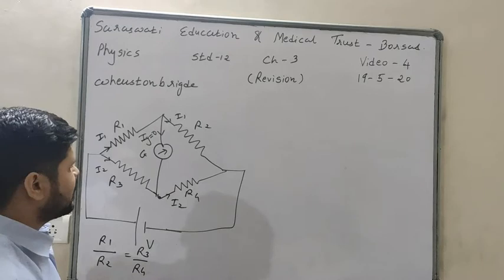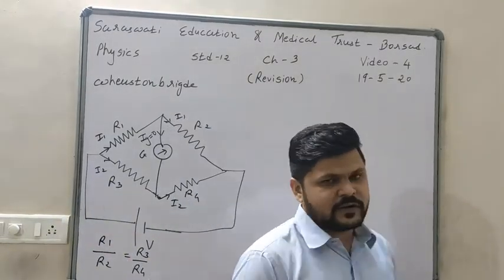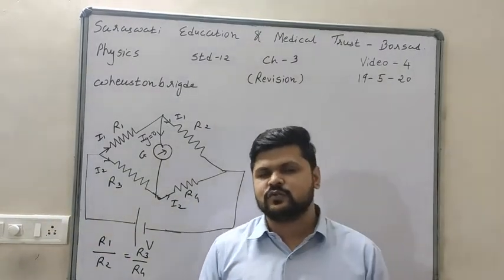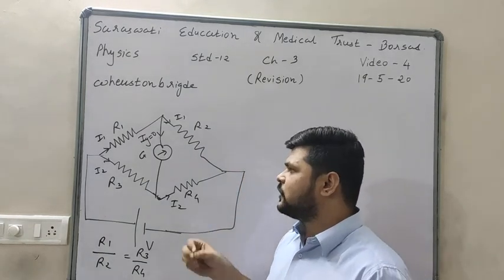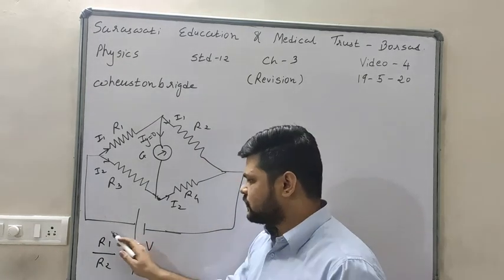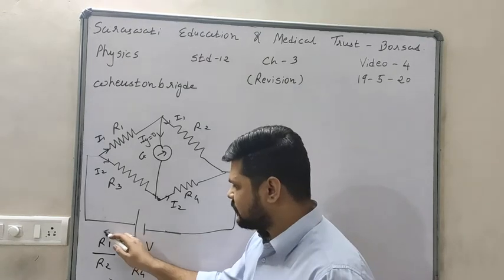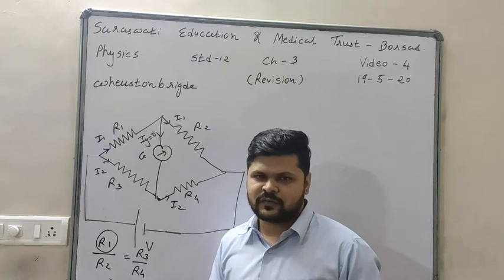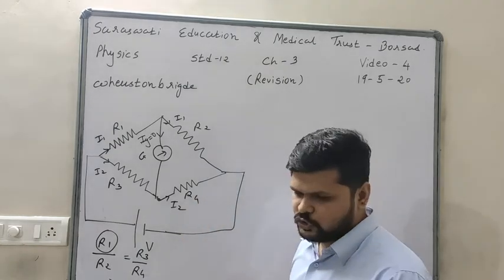In Wheatstone Bridge, one more important thing is its application — what is the use of Wheatstone Bridge. It is used to find out the unknown resistance. From the 4 resistances, 1 resistance is unknown. Suppose R1 is unknown, so to find out the value of R1, this Wheatstone Bridge is used.